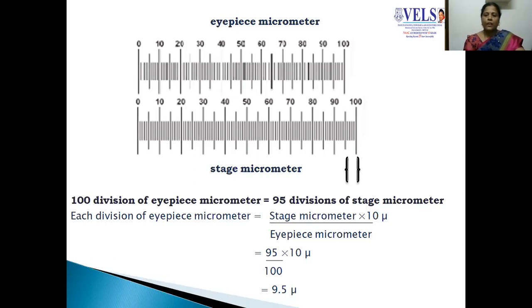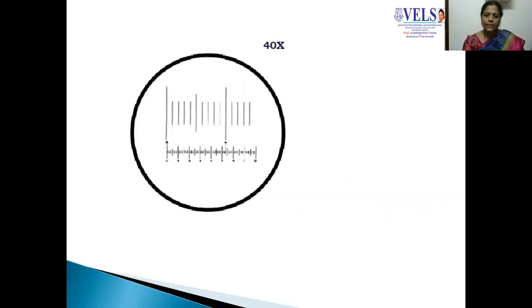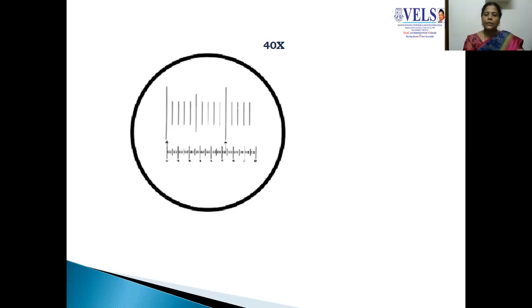This is known as the calibration factor. Using this calibration, we can measure the length and width of phloem fibers. The same IPS micrometer, when focused at high power — 40x — will look like this; the divisions of the stage will be enlarged. If you are measuring at low power, you must calibrate at low power and use that calibration value. If you are measuring the size of tissues or cells at high power, the calibration factor obtained at high power must be used for further calculations.